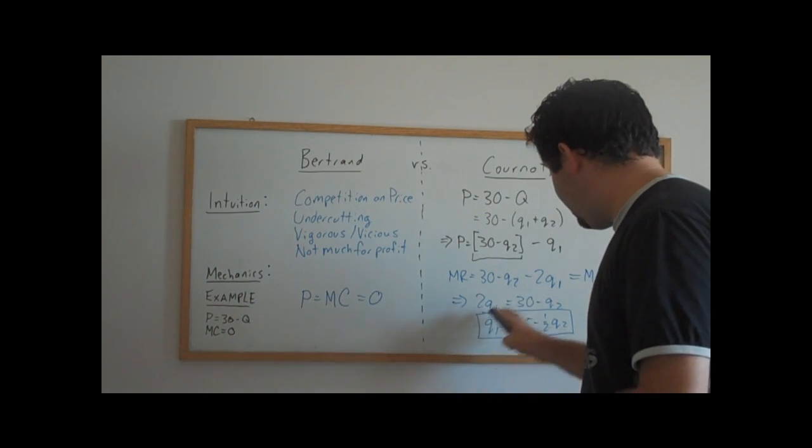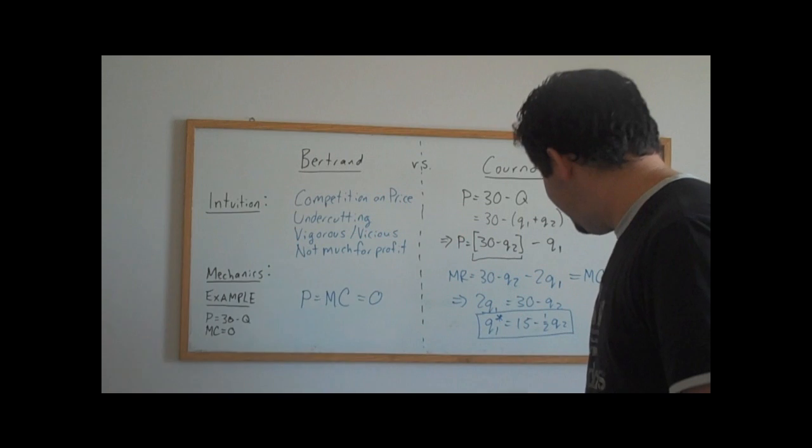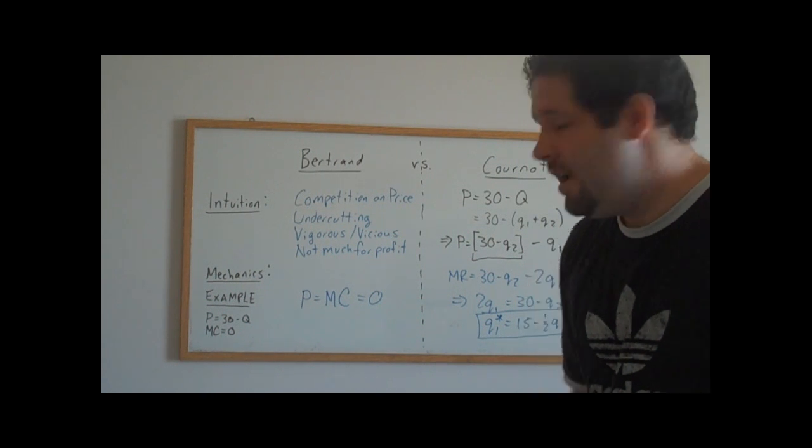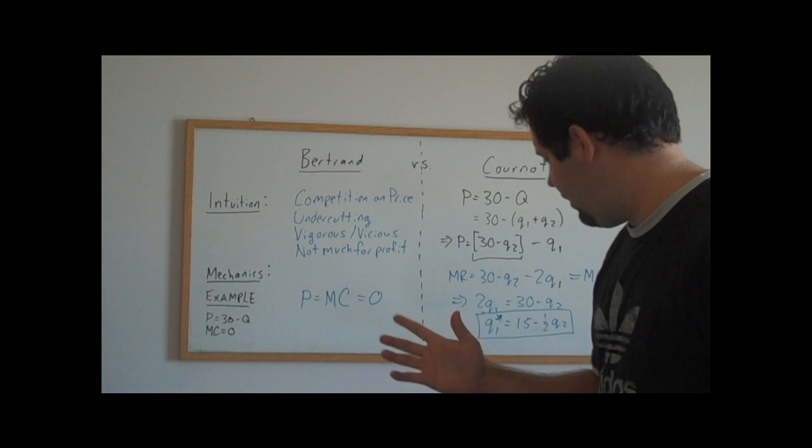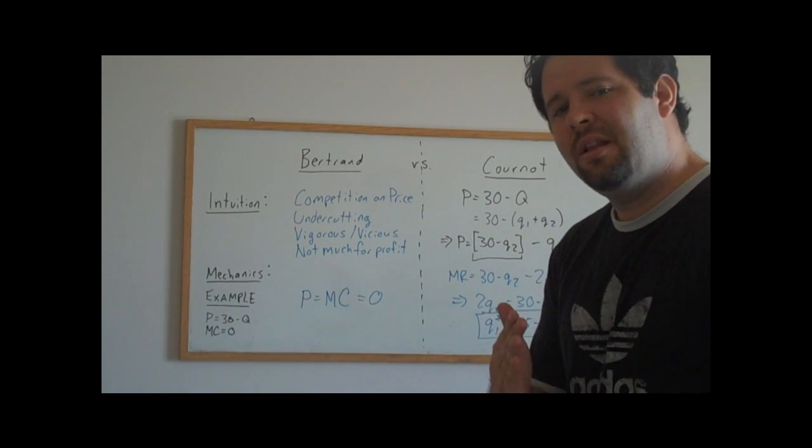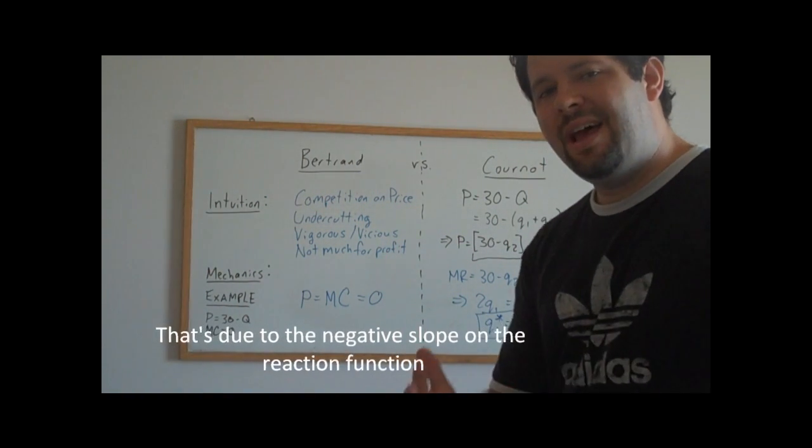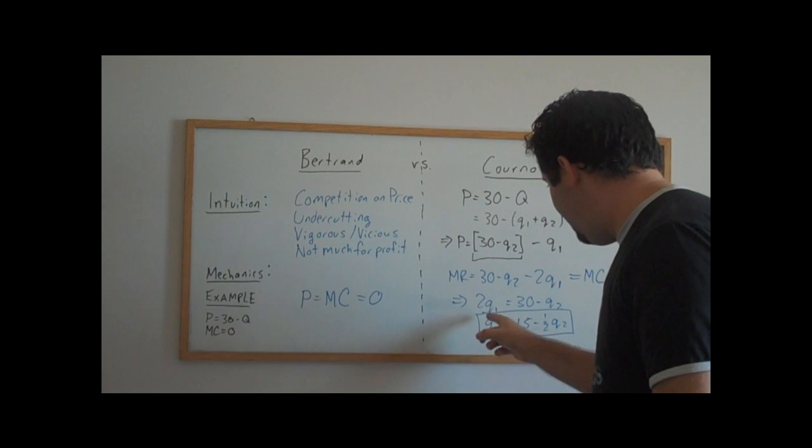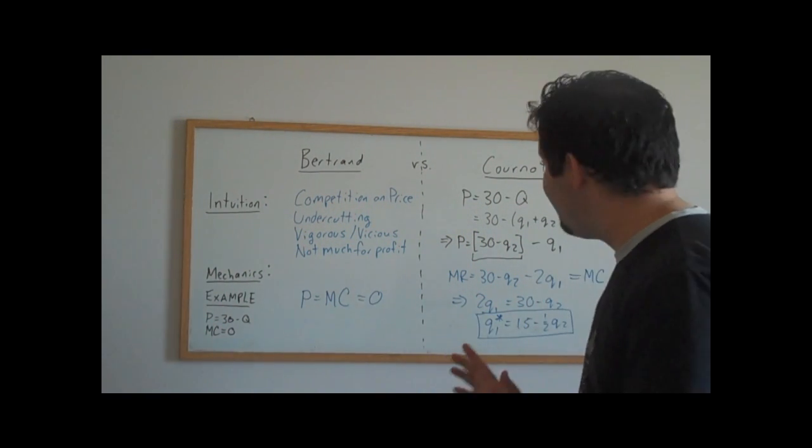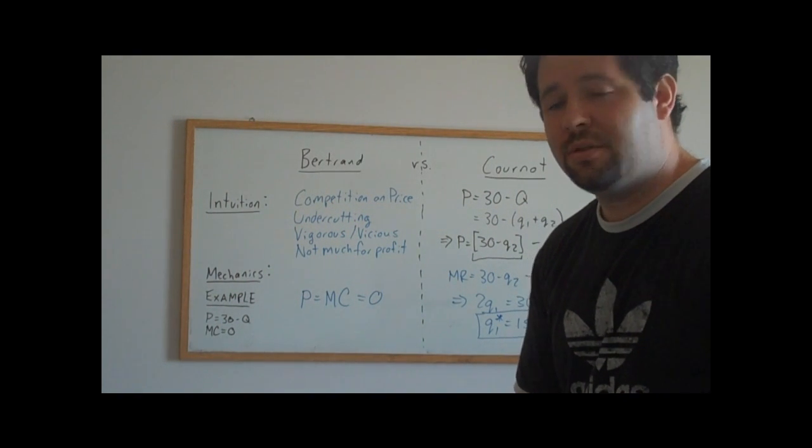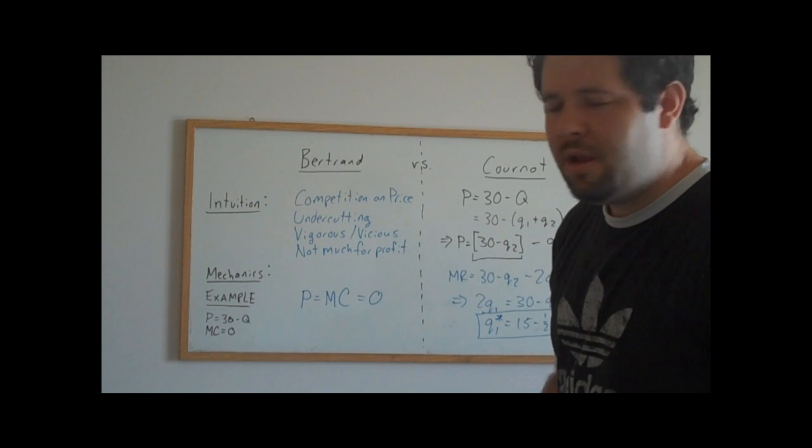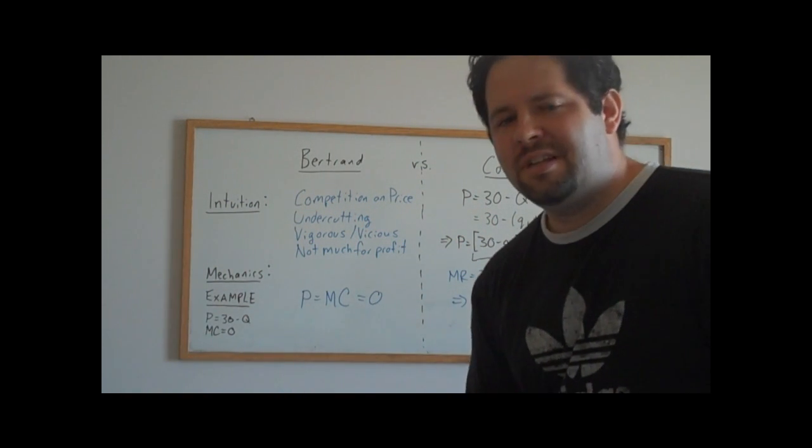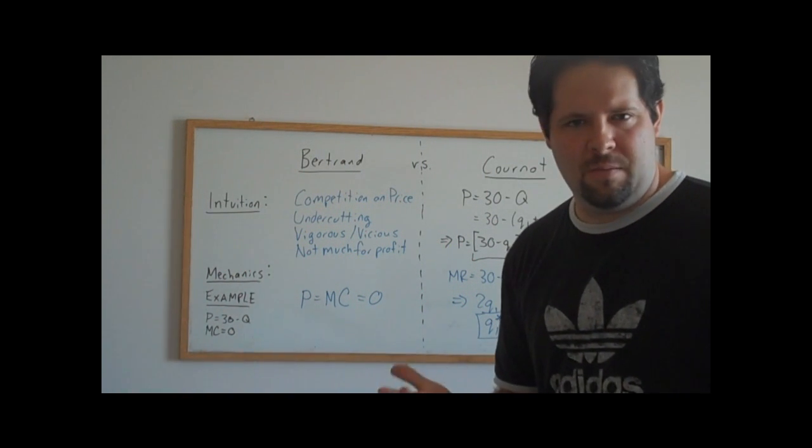Now this function here is what we call the best response function or the reaction function. And it tells us the best quantity that firm one can pick given a choice that firm two picks. And what's interesting about this is that if firm two produces more, the best response of firm one is to produce a little bit less. Or alternatively, if firm two produces less, the best response of firm one is to produce more. So there's sort of a give and take nature to the strategy of firm one given what firm two does. And their strategy is how much quantity do I produce. So this is very different than the strategy over here in Bertrand, where if I decrease my price, your incentive is to decrease your price. We're giving and taking. We both have an incentive to raise the price, and we're doing so in a nice way that doesn't compete all the profits away.